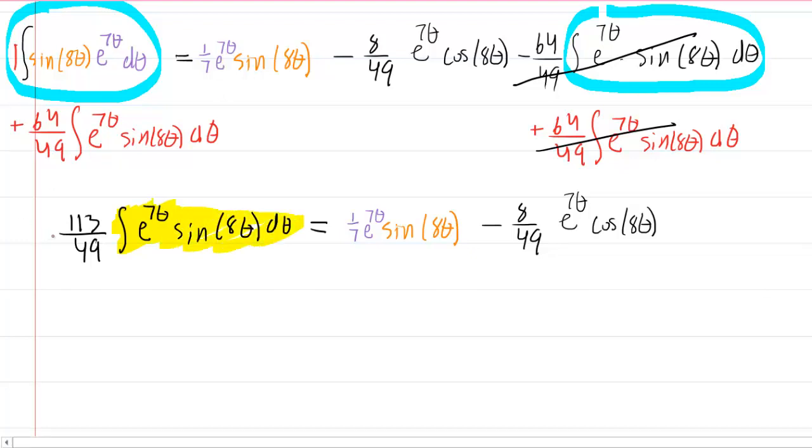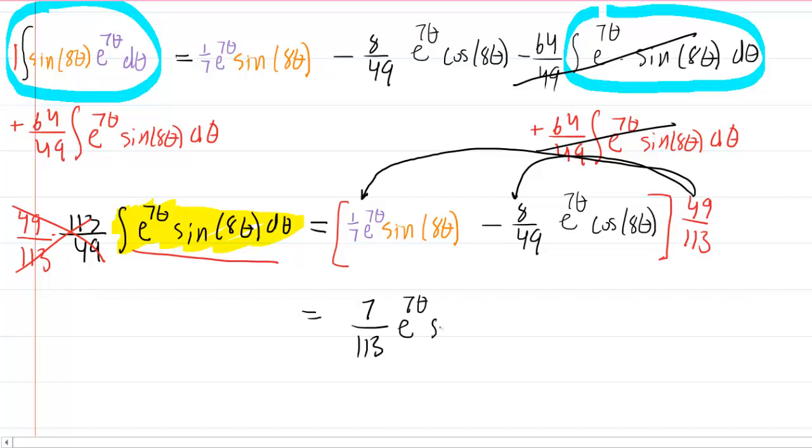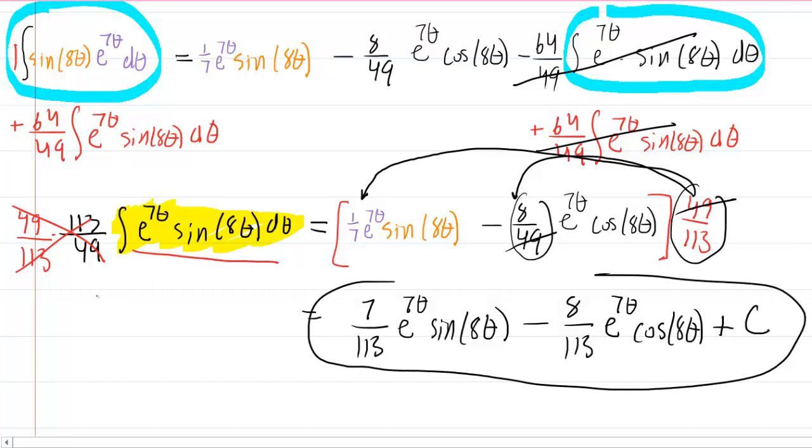We are one step away from solving for the answer because we're trying to evaluate this integral. Well, if you watch carefully and multiply both sides by 49 over 113, we'll have to do this to the entire right-hand side. Those would cancel out. You'd be left with the integral you were trying to evaluate over here on the right-hand side. You just have to make sure you distribute the 49/113 here as well as to over there. So, when we multiply the 49 over 113 by the 1/7, we would get 7 over 113 e to the 7θ sine of 8θ minus. Now, when you multiply the 8 over 49 times the 49 over 113, the simplest thing to realize is the 49s cancel. So, you're left with 8 over 113 e to the 7θ cosine of 8θ. And then just include your constant of integration, and you are now done with the problem. That is the integral of e to the 7θ sine of 8θ dθ.